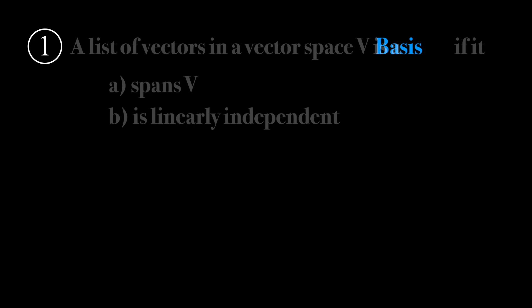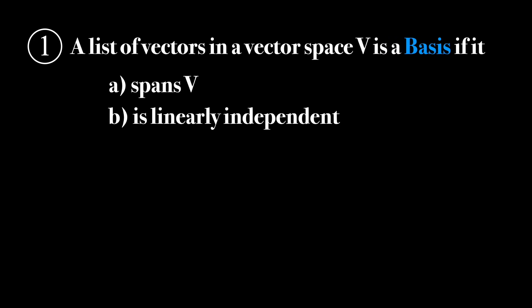A basis is a list of vectors in a vector space that satisfies two criteria: one, it spans the vector space, and two, it is linearly independent.